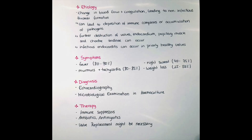Regarding etiology: when there is a change in blood flow or coagulation — when hemostasis comes out of order — that can lead to non-infectious thrombus formation. When the endothelium of the endocardium is damaged, the coagulation cascade is altered and thrombi form. This can then lead to the deposition of immune complexes or accumulation of pathogens, and these vegetations are formed.